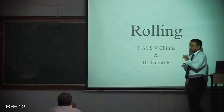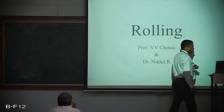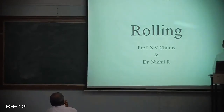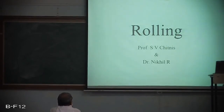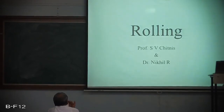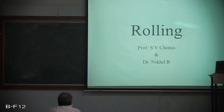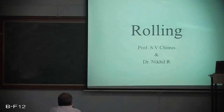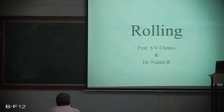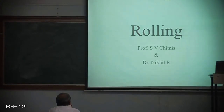With that, we move on to the next process — rolling. Rolling is a metal working process of reducing the thickness or changing the cross section of a workpiece by means of compressive forces exerted by a set of rotating rolls. Unlike extrusion, which is a single pass process, rolling can involve multiple passes.